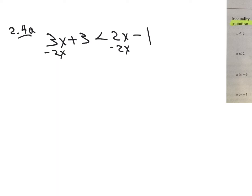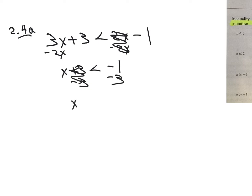That gives us x plus 3 is less than negative 1. Subtract 3 from both sides, and we get x is less than negative 4.